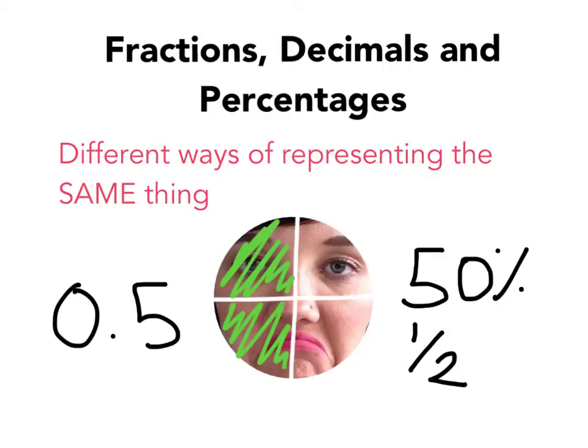Way 1, decimal. Way 2, fraction. And way 3, percent, are just three different ways of representing exactly what I've drawn just there on my circle.